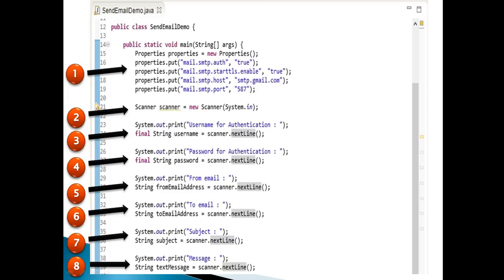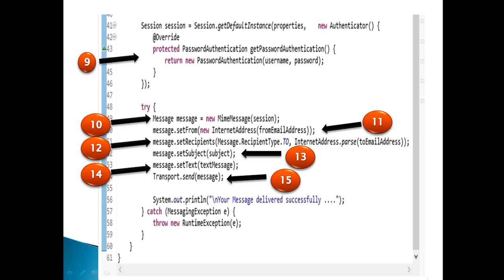Step 9: creating a Session instance. It requires two parameters — the properties instance created above, and an authenticator instance taking in username and password. It requires this for authenticating the user by using the PasswordAuthentication class.